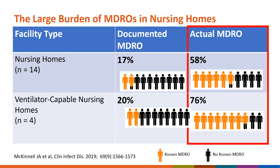Residents who are in nursing homes, including a subset called ventilator-capable nursing homes that provide care to ventilator-dependent residents. In the first column, these are the percentages of residents who had documentation in their medical record of the presence of an MDRO colonization or infection. So about two out of every 10 residents across all these nursing homes were already known to have an MDRO.